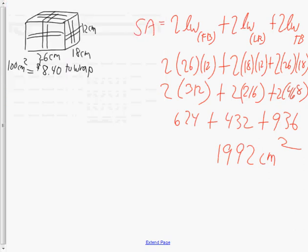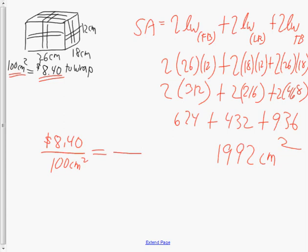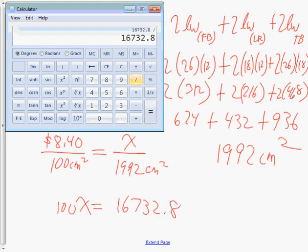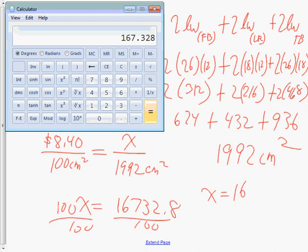Since 100 centimeters squared costs $8.40, this is going to be very expensive. Writing it as a proportion: $8.40 per 100 centimeters squared, proportional to unknown cost for 1,992 centimeters squared. Using the algebraic method: 100x equals $8.40 times 1,992, which gives 16,732.8. Dividing by 100 to isolate the variable, the cost to wrap that present is $167.33.